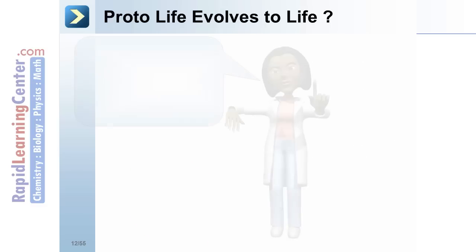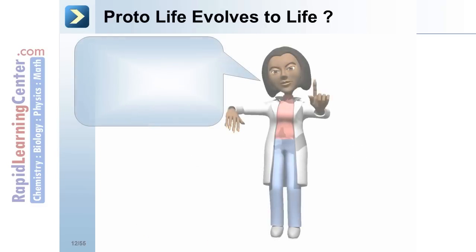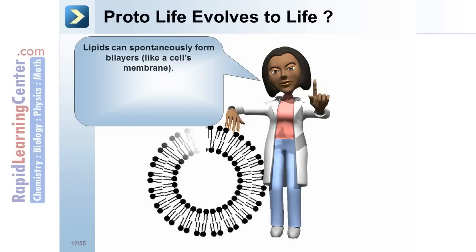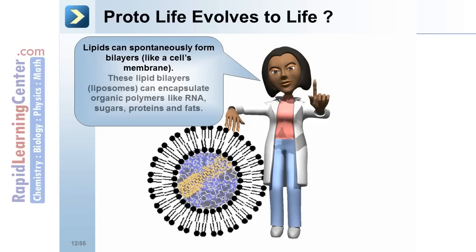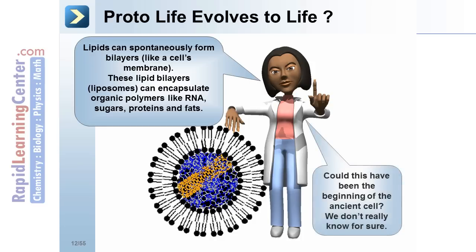Protolife evolves to life: lipids can spontaneously form bilayers like a cell's membrane. These lipid bilayers — liposomes — can encapsulate organic polymers like RNA, sugars, proteins, and fats. Could this have been the beginning of the ancient cell? We don't really know for sure.